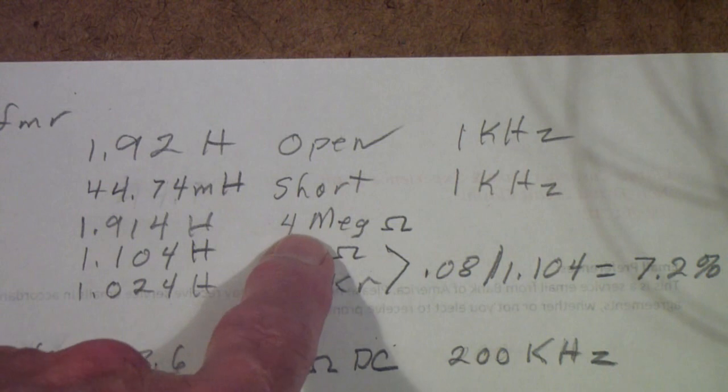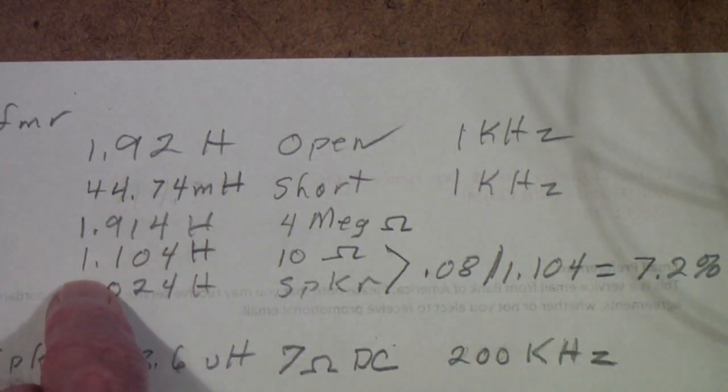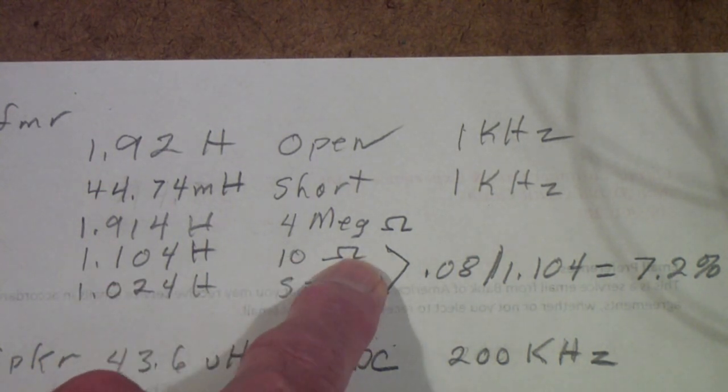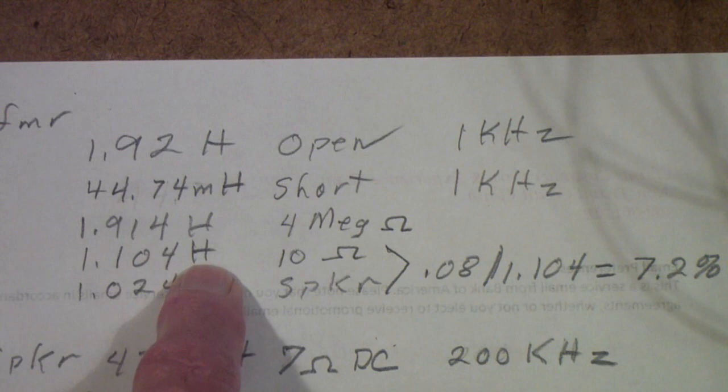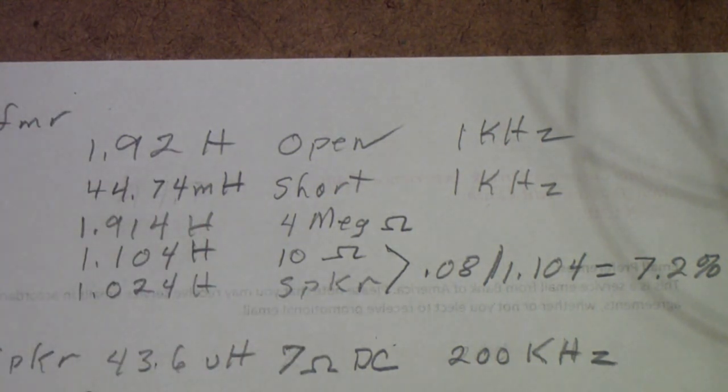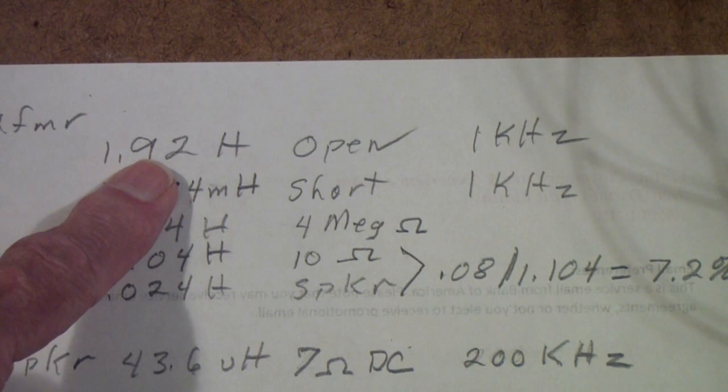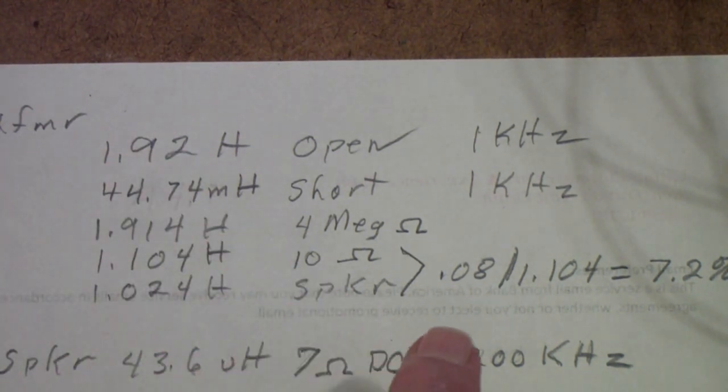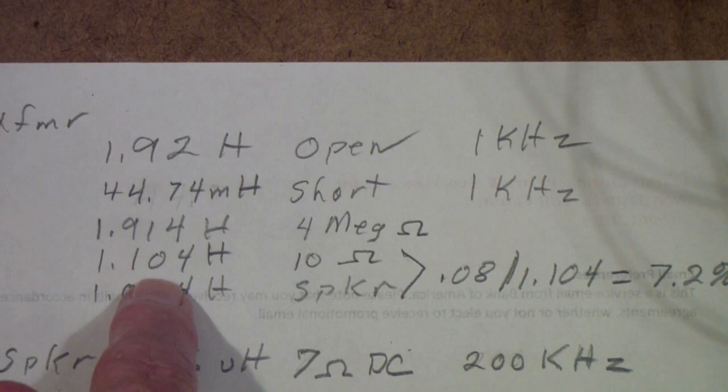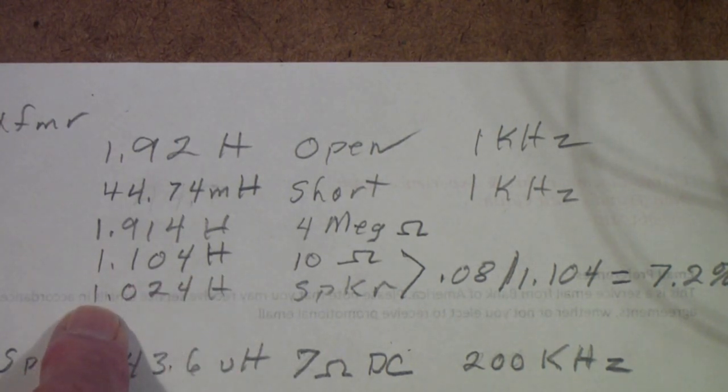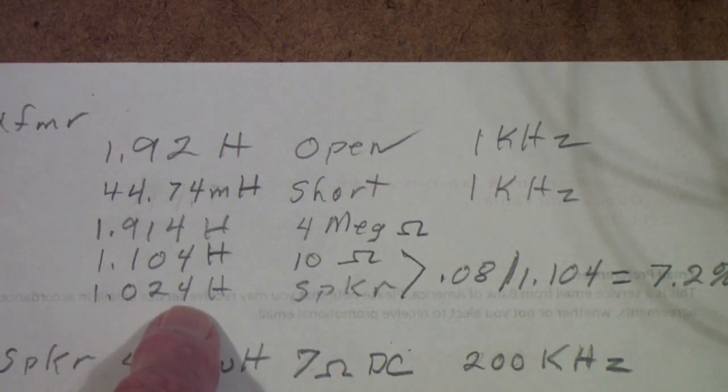I remeasured using 4 megaohms on the output, but disregard that. The more important one is that when I put a 10 ohm load on the secondary, I measured 1.104 henry. And that is what actually causes the ellipse. What happens is that the total impedance of the circuit is the vector sum of the inductance and the resistance. And since the resistance is reflected, it's multiplied by the square of the turns ratio. So the effective inductance with a 10 ohm load is 1.104 henrys. The effective inductance with a speaker attached is 1.024 henrys.